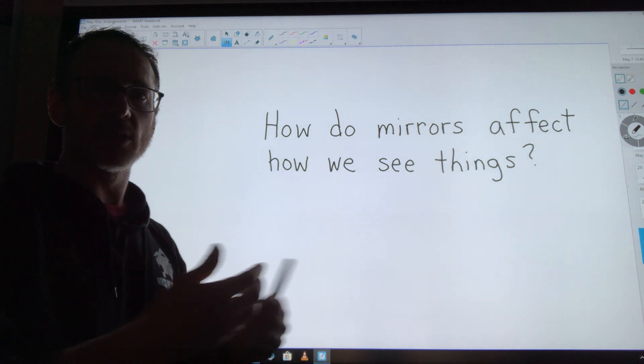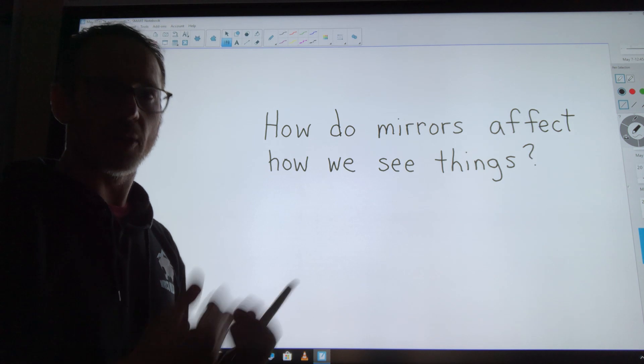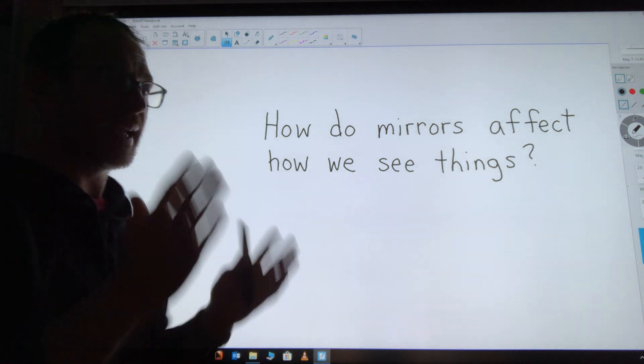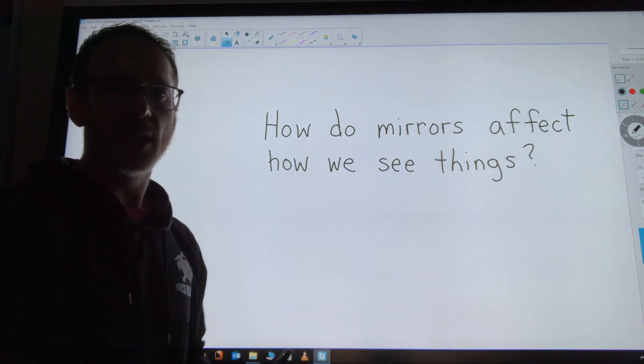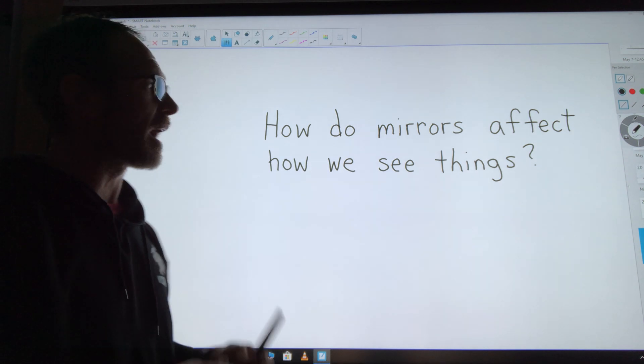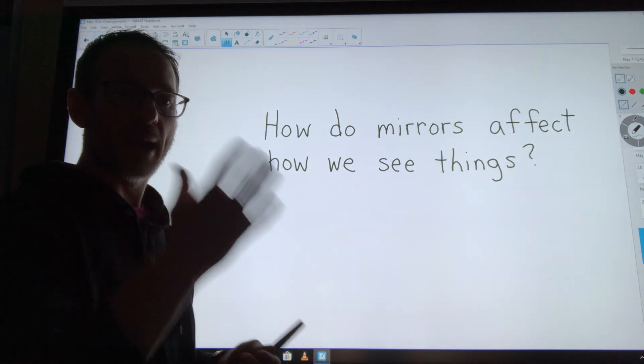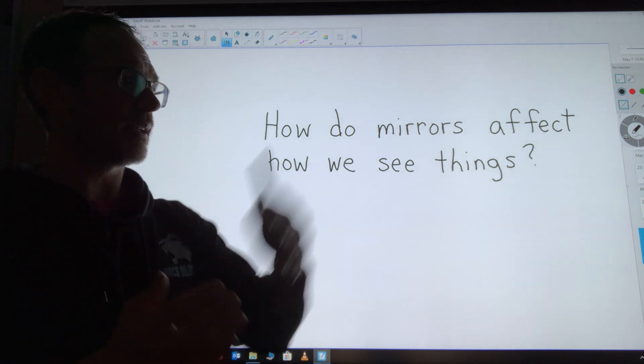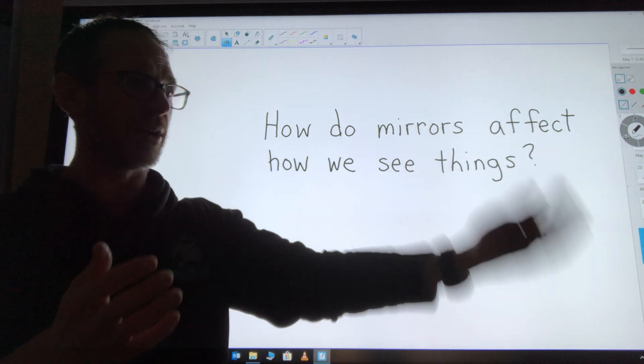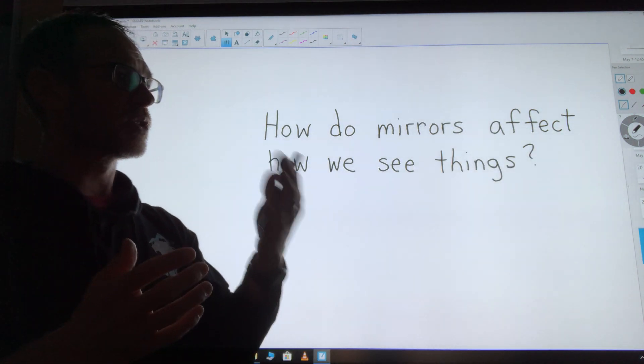When light bounces off of a flat mirror, it bounces back straight at whatever's looking at it. So when I'm looking into a mirror, my right side where the light has gone from my hand to the mirror and then back to my eye is going to look like the person who's standing in the mirror's left side.